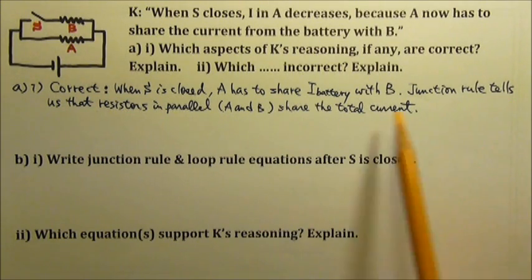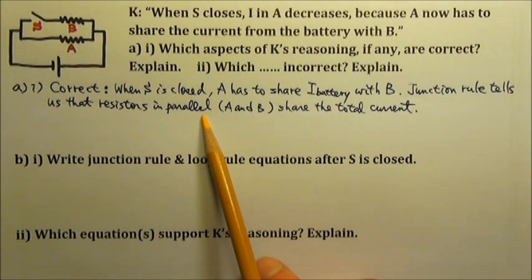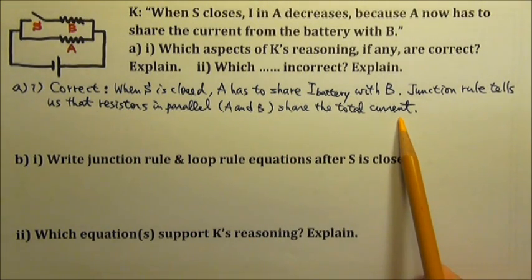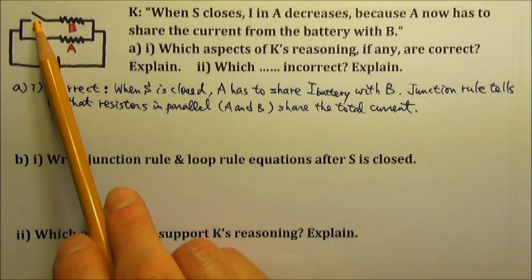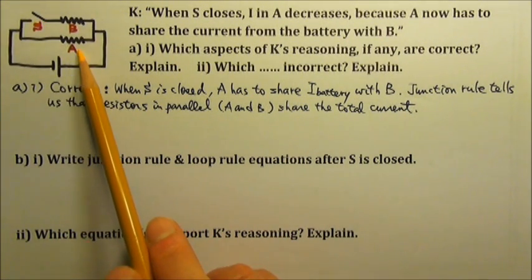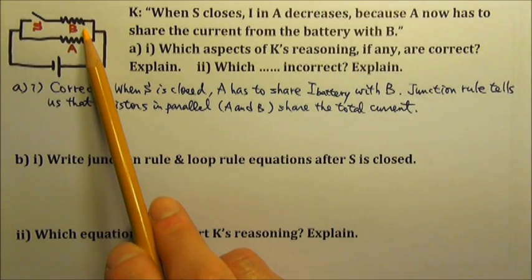The junction rule tells us that resistors in parallel share the total current. When the switch is closed, A and B are in parallel.